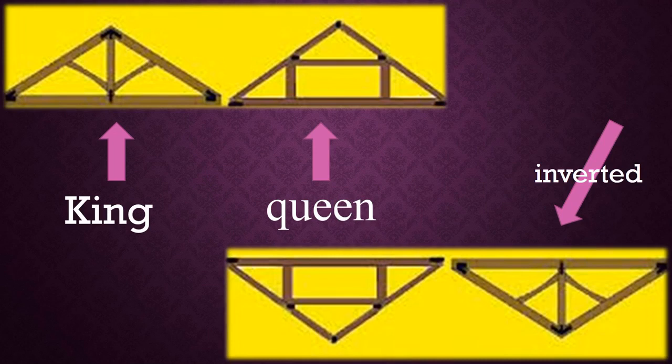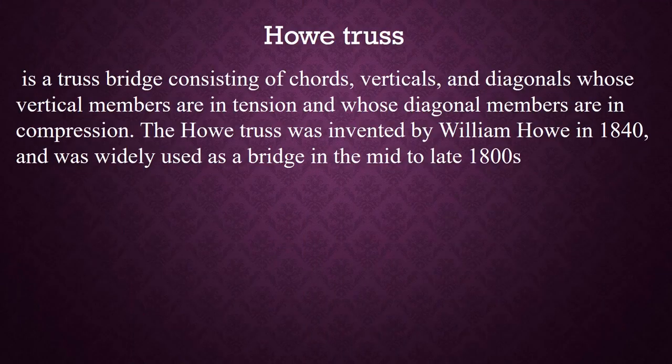The third one is inverted king post truss and the fourth one is inverted queen post truss. If we invert the king post truss it is called inverted king post truss, and if we invert the queen post truss it is called inverted queen post truss.